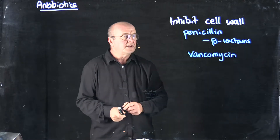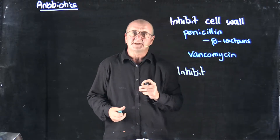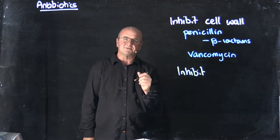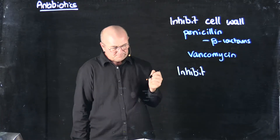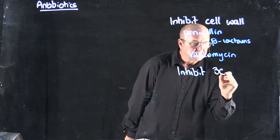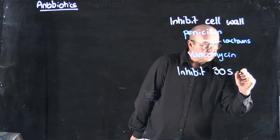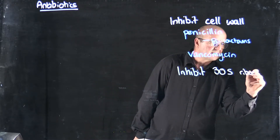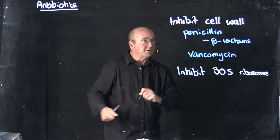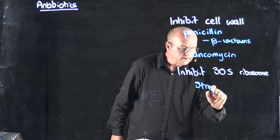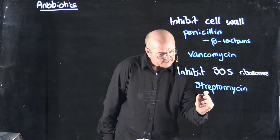We can also inhibit some of the cellular machinery. Remember when we talked about the central dogma — transcription and translation. A common target of antibiotics is the 30S subunit of the ribosome. A couple of antibiotics that you may have heard of that inhibit the 30S are streptomycin and tetracycline.